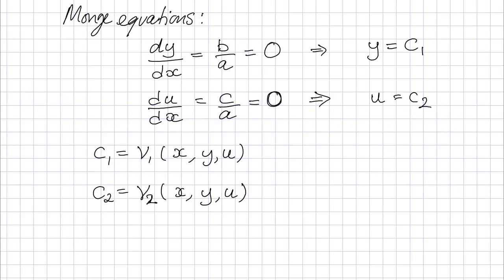So that's the two surfaces and the intersection of those gives us the characteristics. So here we've identified v1 as being y and v2 is equal to u.